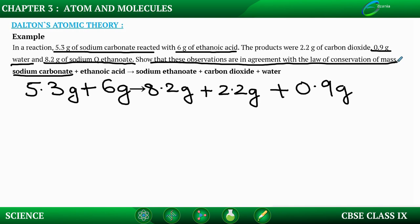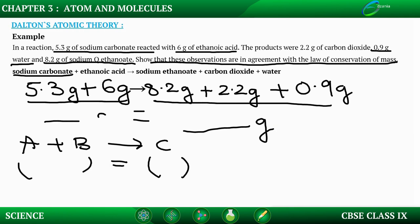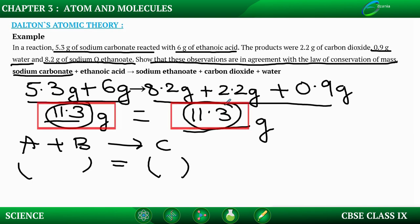We have already learned that the law of conservation of mass states that when reactants A and B react to give product C, the mass on the reactant side equals the mass on the product side. Adding the reactants: 5.3 plus 6 gives 11.3 grams. Adding the products: 8.2 plus 2.2 plus 0.9 gives 11.3 grams. Since 11.3 grams equals 11.3 grams, this is in agreement with the law of conservation of mass.